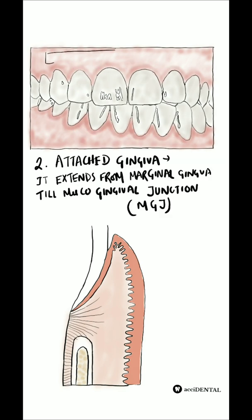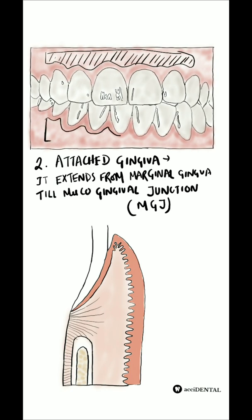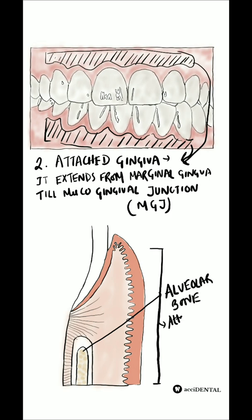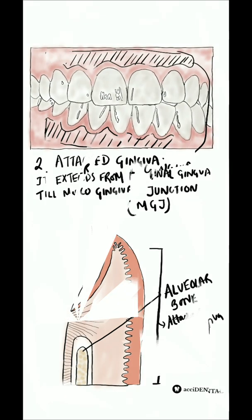Next we have the attached gingiva, which extends from the marginal gingiva to the mucogingival junction and covers the alveolar bone or the alveolar process of the jaw. This is firm, resilient, and tightly bound to the underlying periosteum, with a height of about 3 to 12 mm.